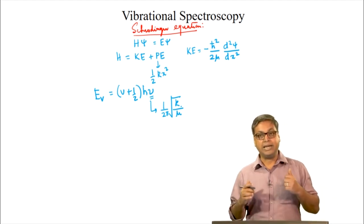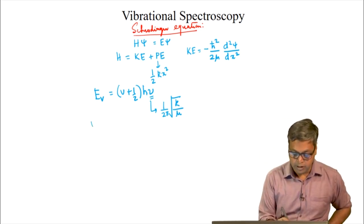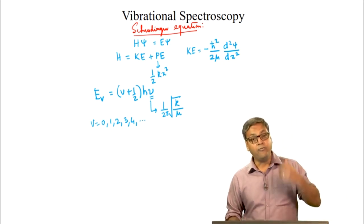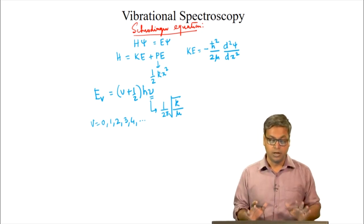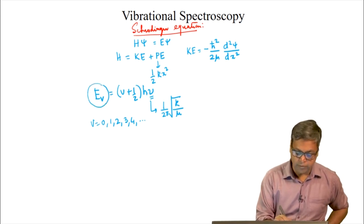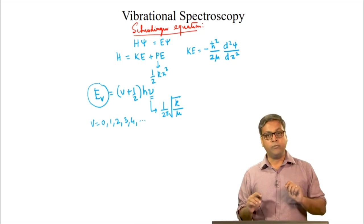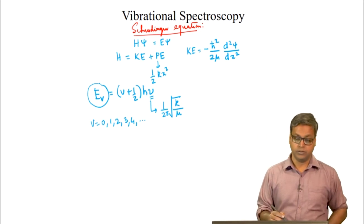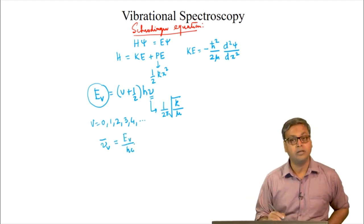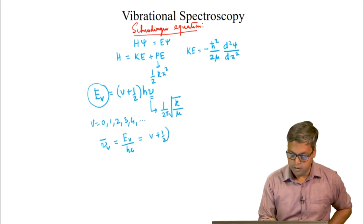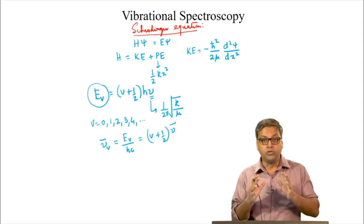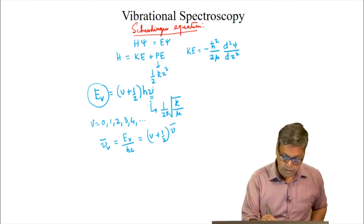The vibrational quantum number can take integral values: v = 0, 1, 2, 3, 4 — for every value of v there is a corresponding wave function and energy level. The vibrational energy E_v is in joules. To express it in wave numbers, we write ν̃_v = E_v / (hc) = (v + 1/2)ν̃. The vibrational energy depends on the reduced mass of the molecule through its dependence on the frequency.